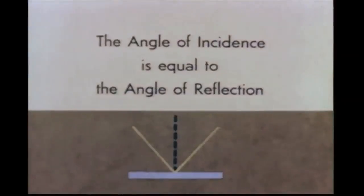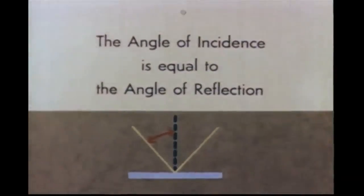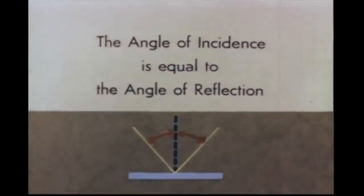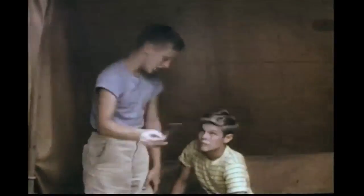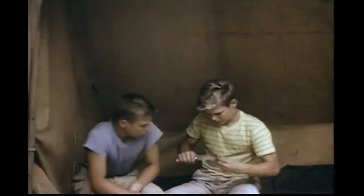Sandy showed Bud the relation between the incoming light and the reflected. Regardless of the size of the angle, the law of reflection is the same. The angle of incidence — that is, the angle at which a ray strikes the surface — is equal to the angle of reflection, the angle at which it leaves. This principle is true not only for flat or plane mirrors, but also in a slightly different way with curved mirrors.